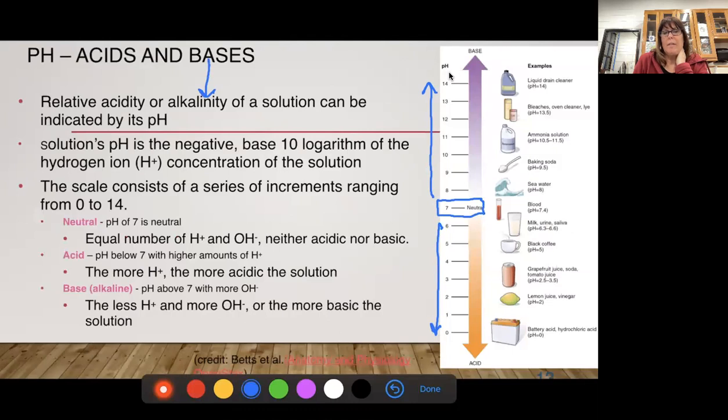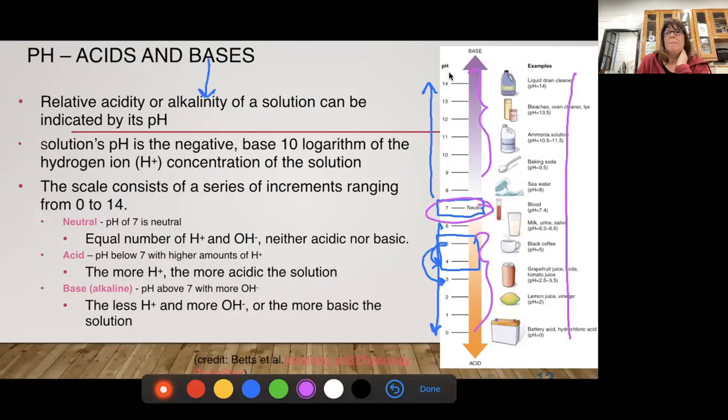Now this scale is logarithmic. So if I go from 4 to a 5, these are differences. Like if I go from 5 to 4, I have 10 times more H pluses. If I go from a 5 to a 3, I'm going to have 100 times more H pluses. So it goes up by a factor of 10. That's what that logarithmic means. And like I said, 0, we have our neutral, we have our alkaline, we have our acid. We can see how these different household substances and stuff compare on our pH scale.